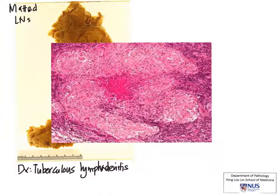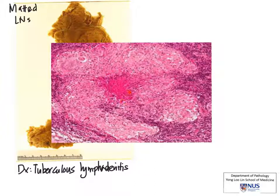One of the most classical things we will see is this whole collection of plump cells, which are called epithelioid histiocytes. Therefore, these are granulomas. And if you're observant, you'll actually see a little pinkish area here — this is caseous necrosis. So in other words, we are looking at necrotizing granulomatous lymphadenitis.